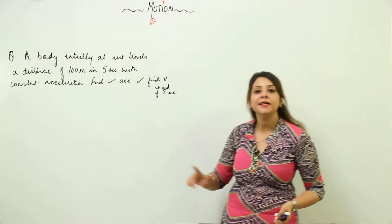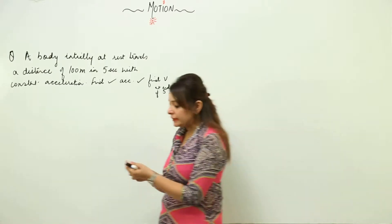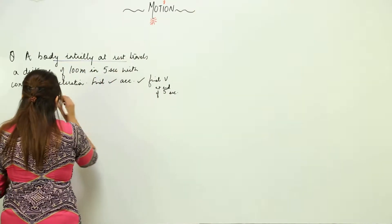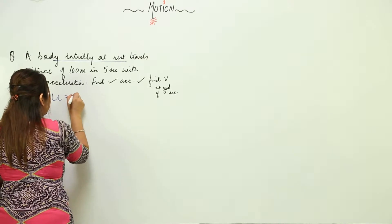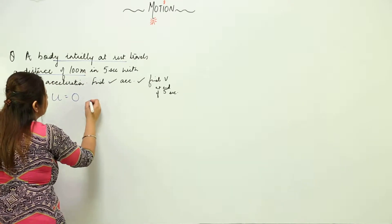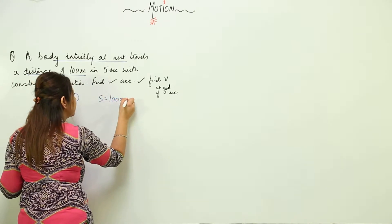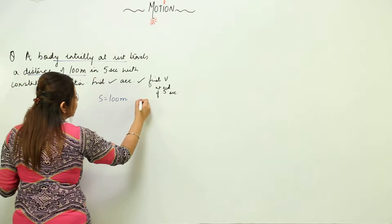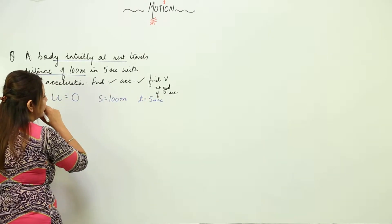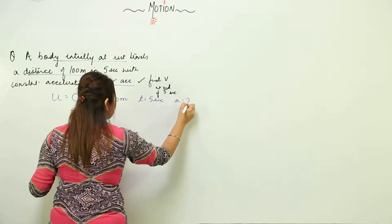We are going to take up the numerical which we missed in the previous slide. It is a body initially at rest, so that means initial velocity is 0. It travels a distance of 100 meters, so s is 100 meters in 5 seconds. This is the time, with constant acceleration, and what we need to find is that constant acceleration.